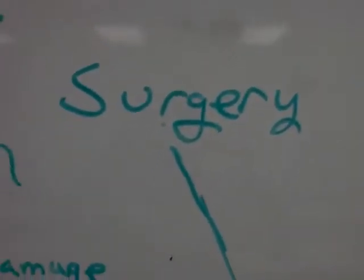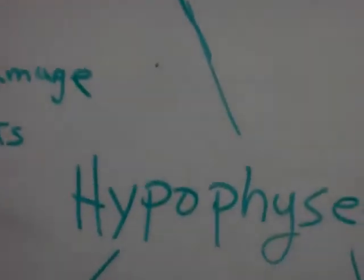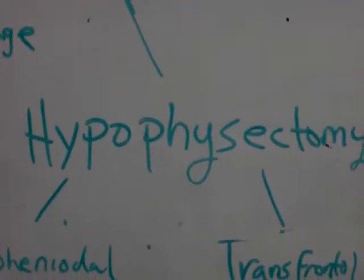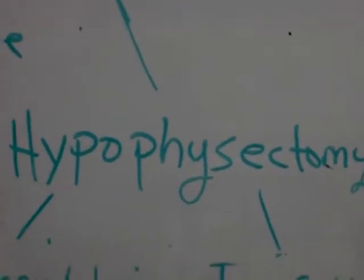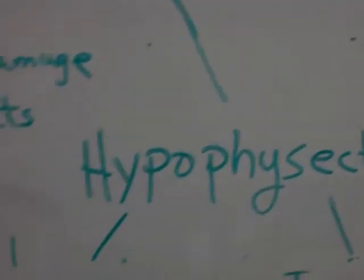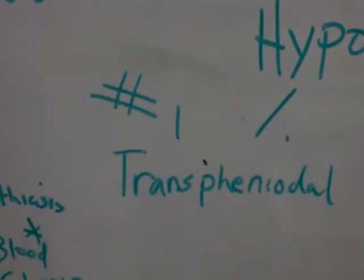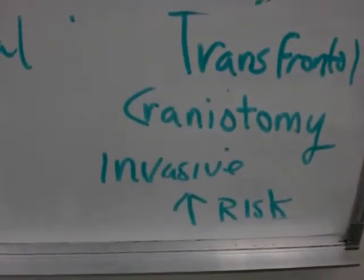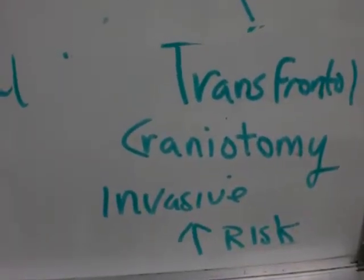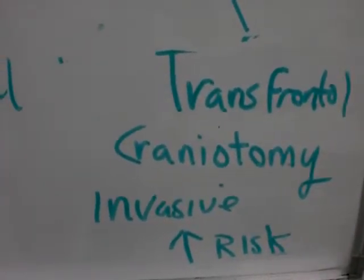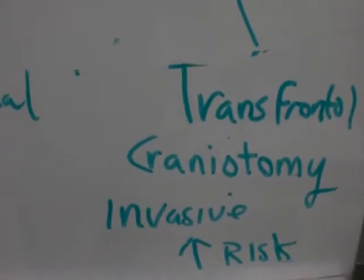The surgical approach: they'll do a hypophysectomy — that's removal of the pituitary gland. Transsphenoidal hypophysectomy is the number one method, and transsphenoid craniotomy is another option. That's very invasive and is generally necessitated by a very invasive tumor.